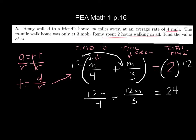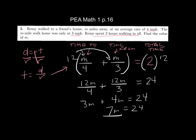That's going to simplify to 3m plus 4m equals 24. 7m equals 24. So divide by 7. m equals 3 and 3 sevenths.